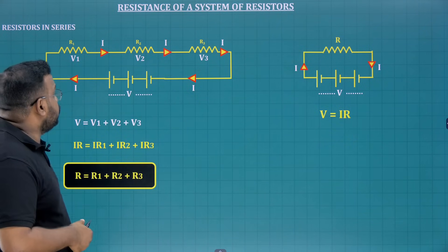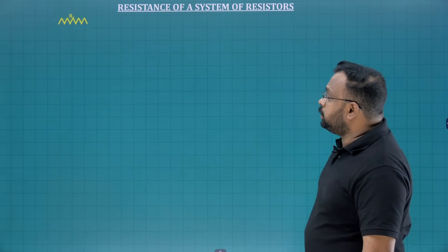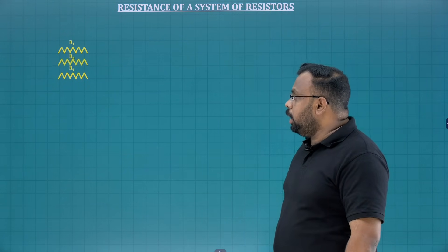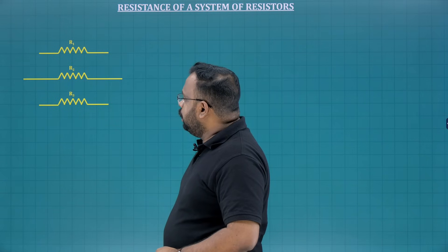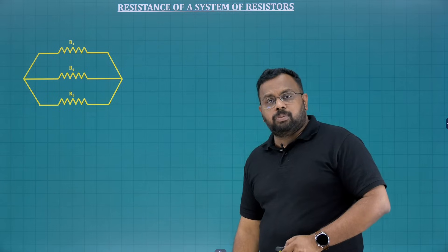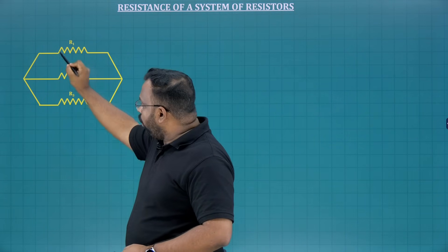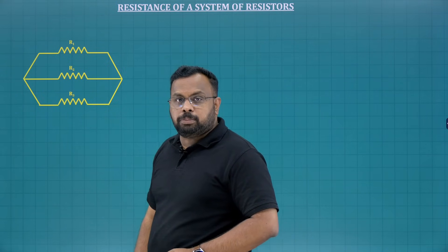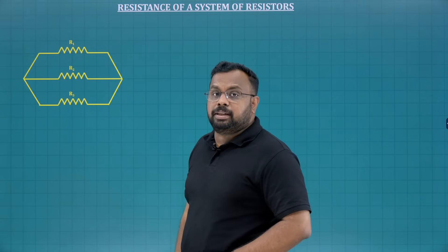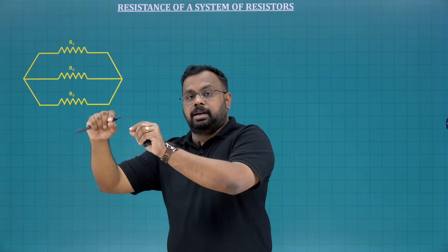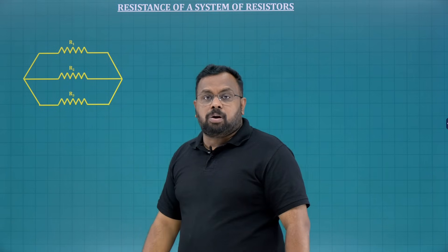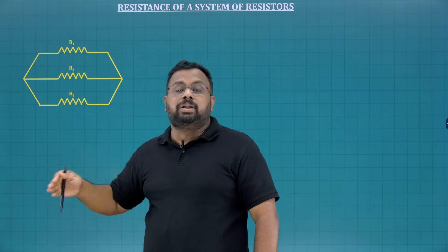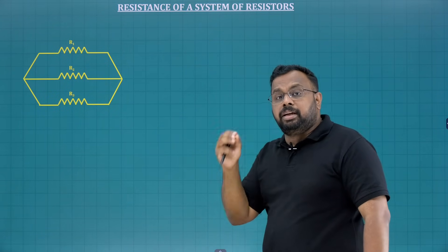Now let us check the other way of connection. Again, we are going to take the three resistors R1, R2, R3 — resistance of a system of resistors. Look at the way how I am going to connect them. This is our next combination. The left end of all three resistors are connected to a common point, and the other ends of all three resistors are connected to another common point. It is not like one end of one resistor connected to the other end of the next — it is not like series. This is called the parallel combination.